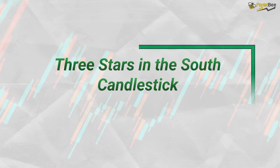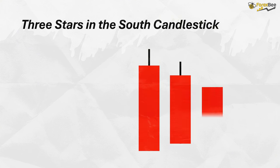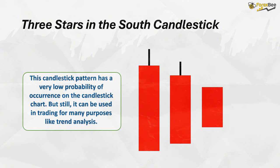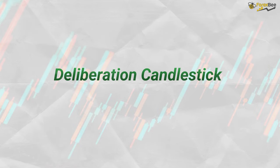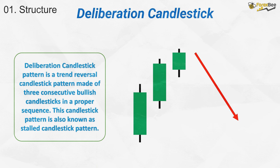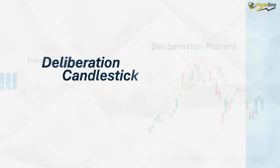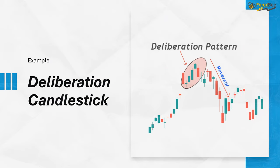Now, let's dive into the three stars in the south candlestick pattern. This formation is made up of three consecutive bearish candles. Although it occurs rarely, it holds significance in technical analysis as it can provide valuable insights into potential trend reversals or continuations. Next, we have the deliberation candlestick pattern, a classic trend reversal signal. It comprises three consecutive bullish candles, with each candle becoming progressively smaller than the previous one. This shrinking size often indicates weakening bullish momentum. The pattern typically forms at key bearish reversal points like resistance or supply zones. In the example, the deliberation pattern highlights a potential shift from a bullish trend to a bearish reversal.